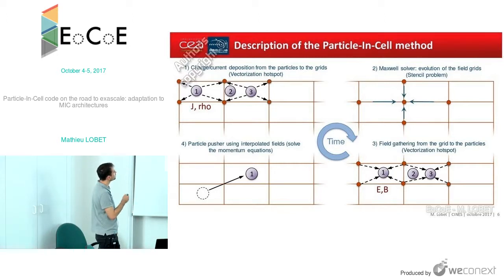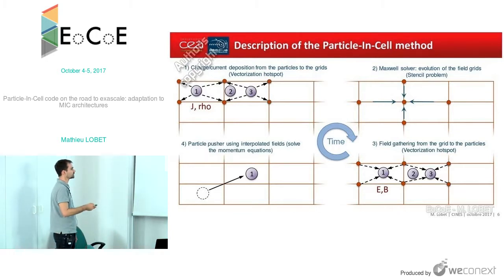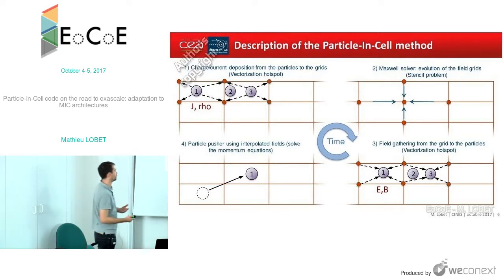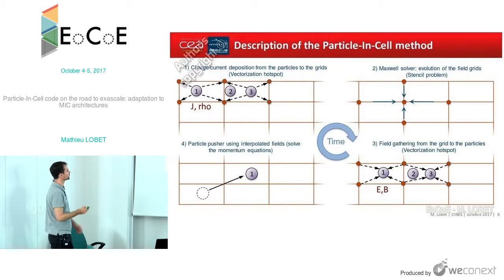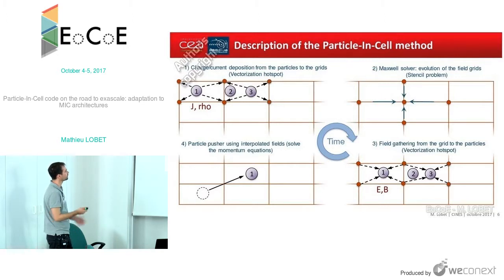Then we have to do the opposite operation: we compute the new information from the grid, like the electric field and the magnetic field, at the particle's position, so that afterwards we can move the particles forward according to the field they see. In such an algorithm, there are two main hotspots for vectorization: the deposition and the field gathering. These two operations are in fact very similar — they are interpolation steps — and usually the same interpolation method is used, but in opposite directions.